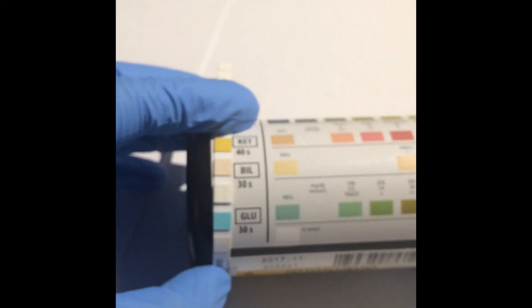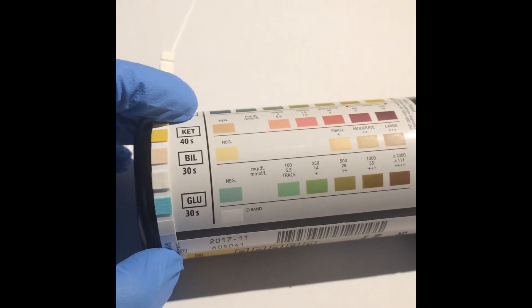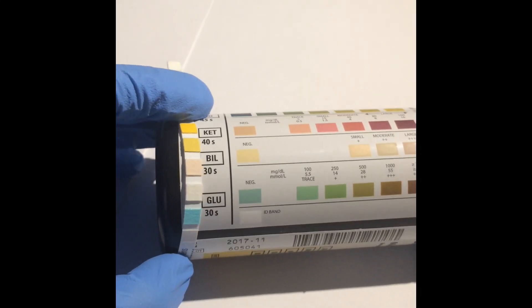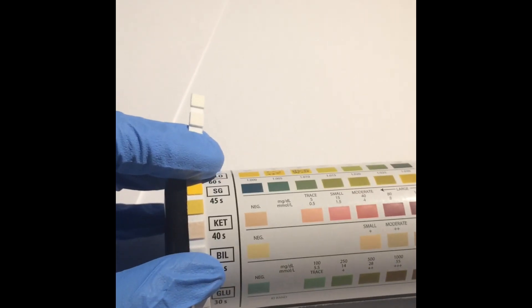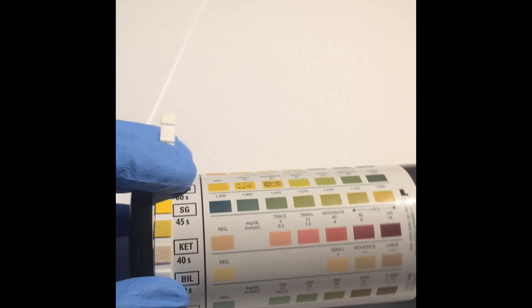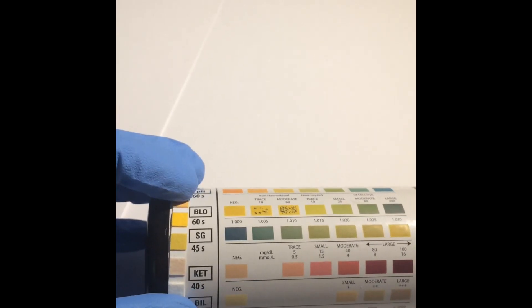First up is glucose and bilirubin, which will be read at 30 seconds. Comparing the color of the dipstick square to that on the bottle will indicate if it's negative, trace, or if the level is positive for each parameter.